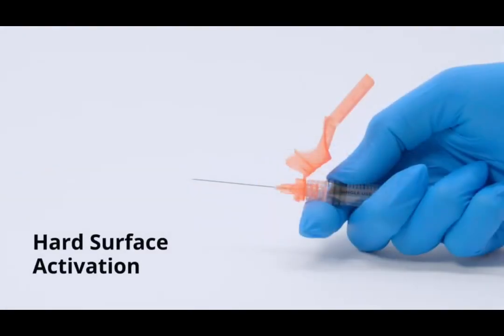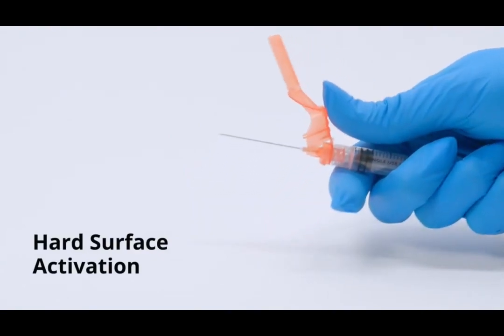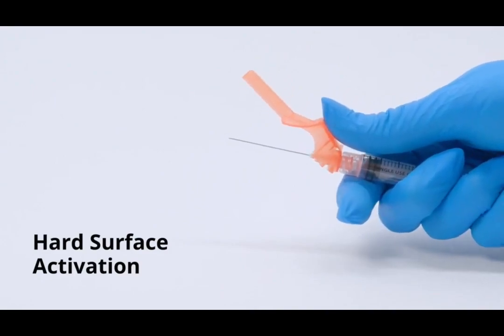Hard surface activation. Push the tab forward with your finger or thumb so that the sheath is less than 90 degrees from the needle.